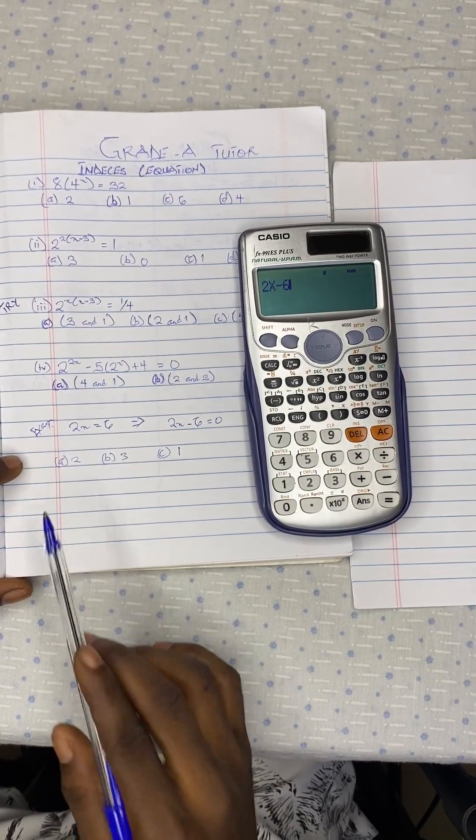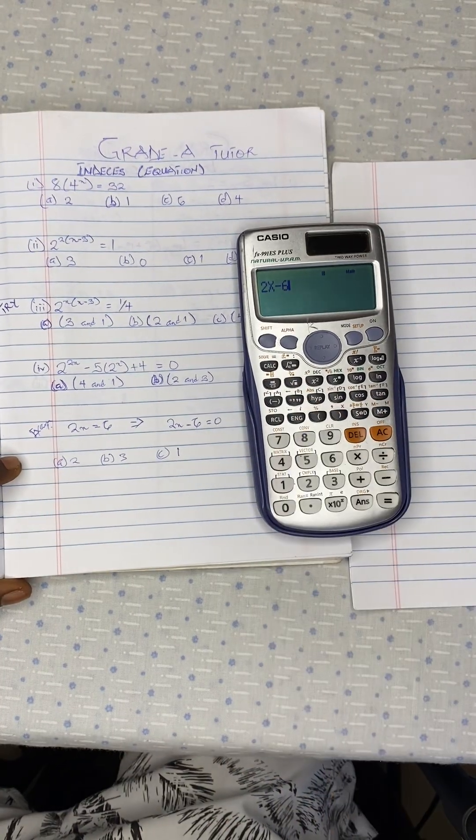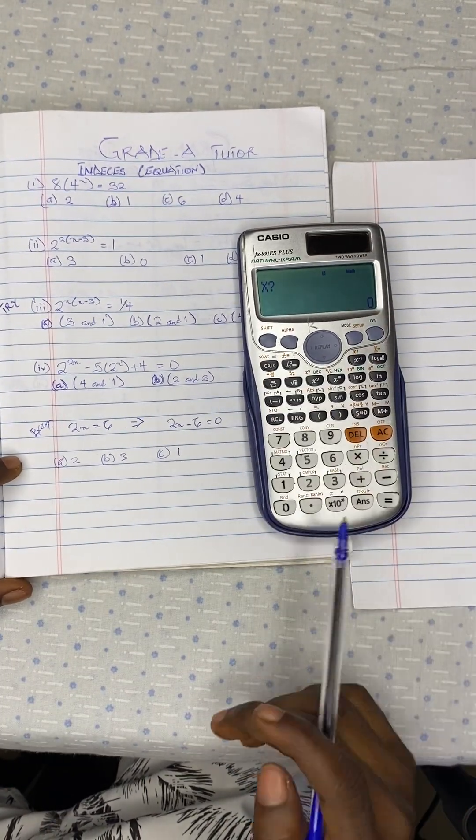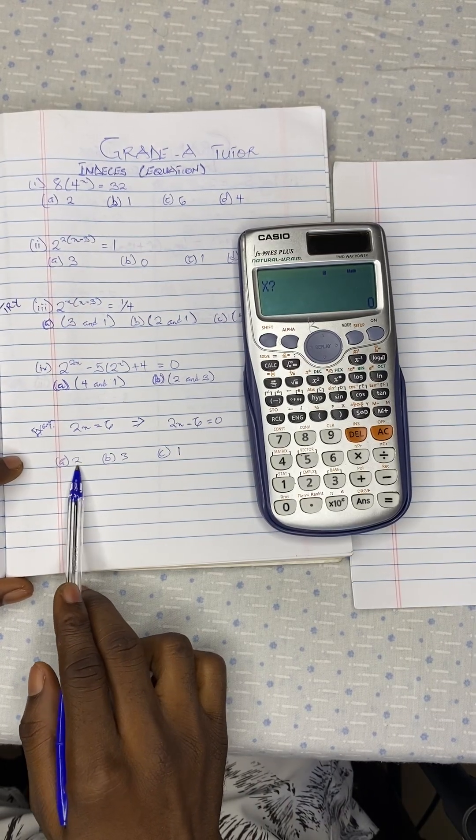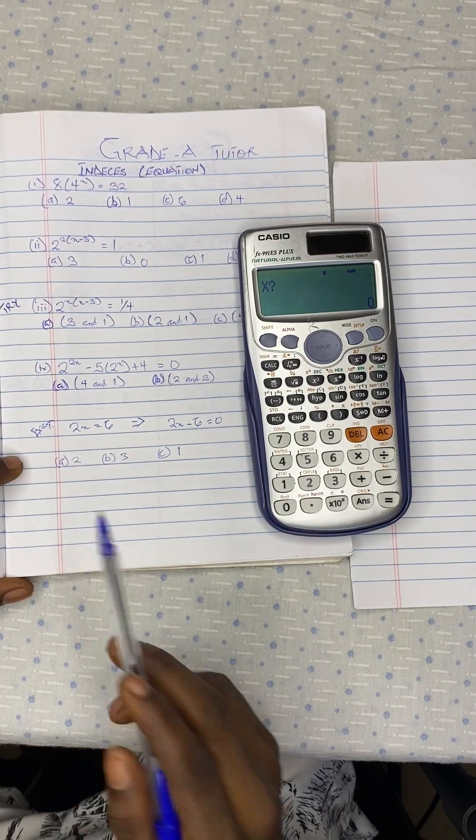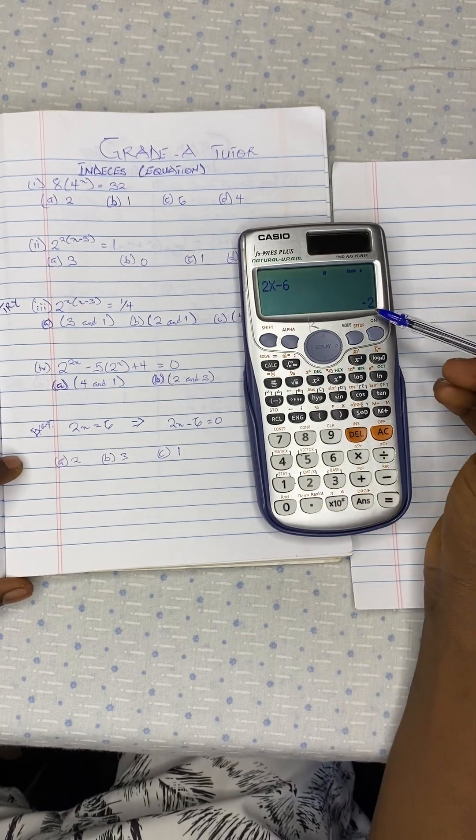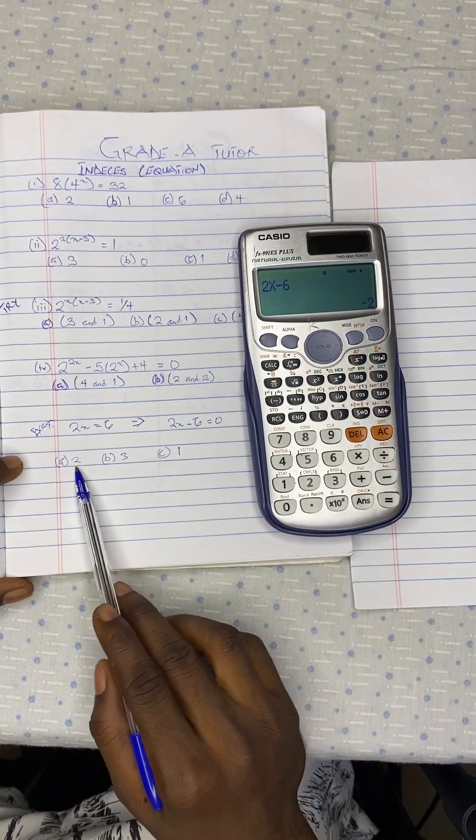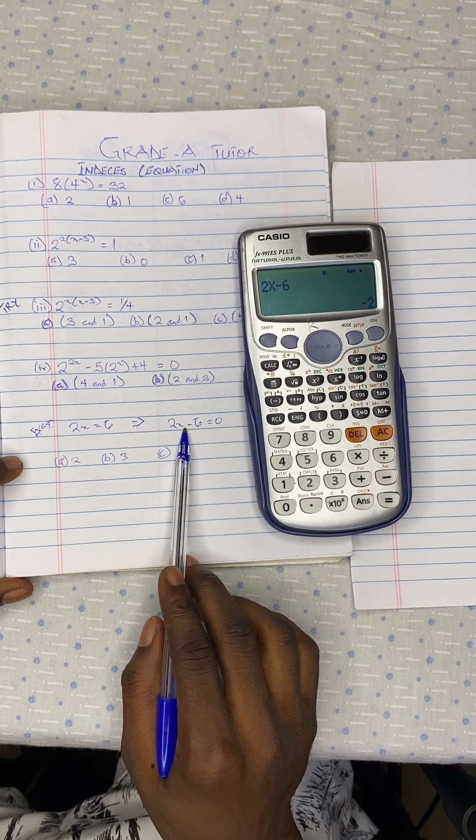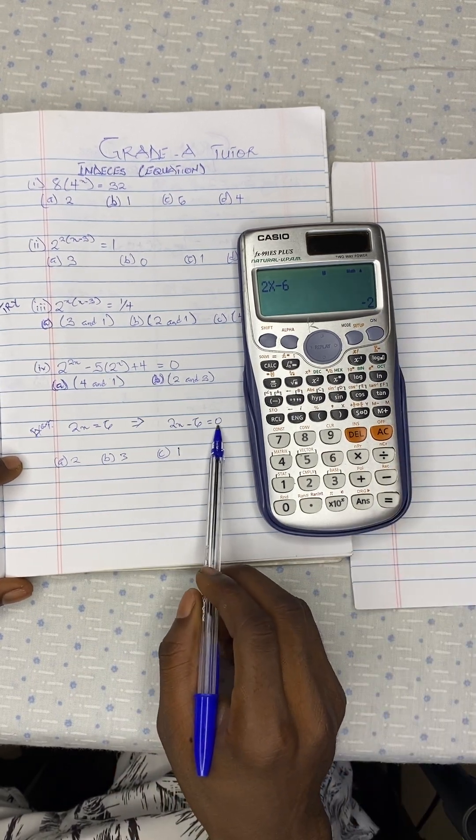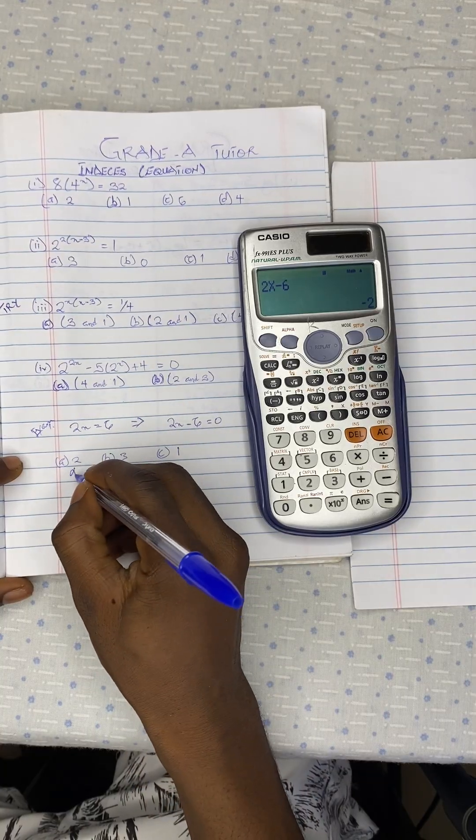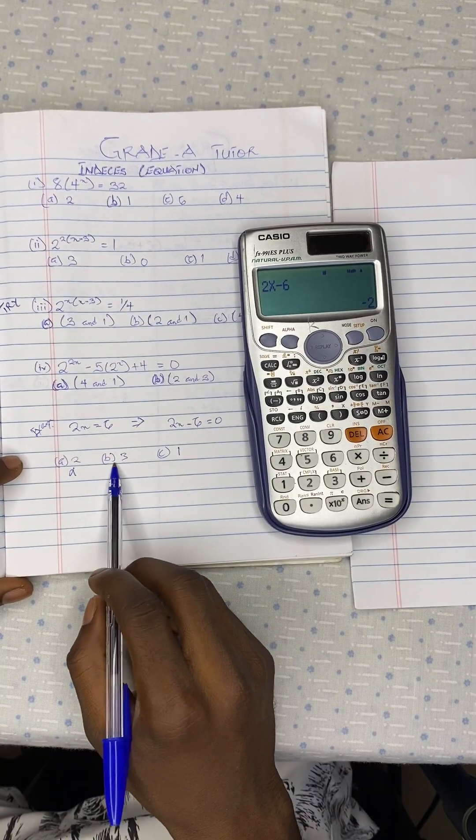So we are going to insert the options. When you press on this, they will ask you for the value of x. So just input the first option, which is 2. So 2 equal to. There is the answer. So it means when you substitute 2 into this equation, we are going to get negative 2. But we want 0. So it means this option is wrong.